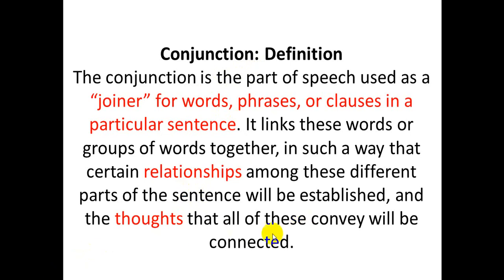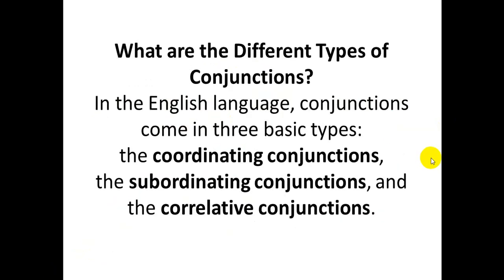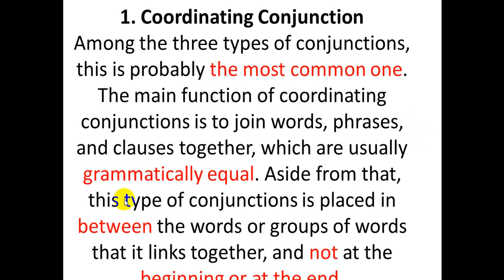Now, what types of conjunctions are there? There are three types of conjunctions: coordinating conjunctions, subordinating conjunctions, and correlative conjunctions.